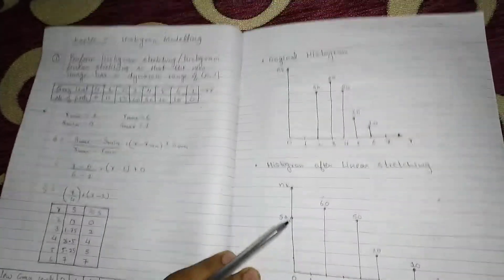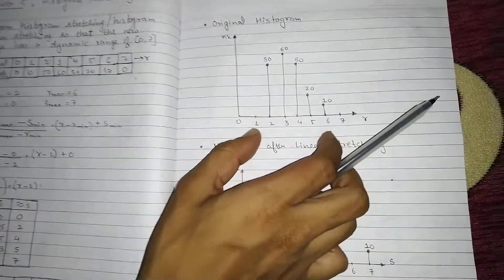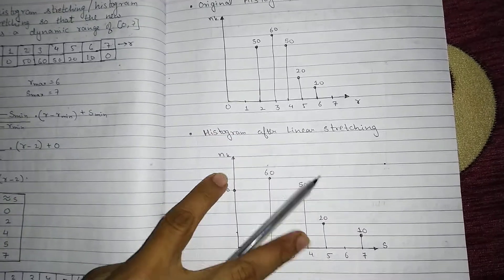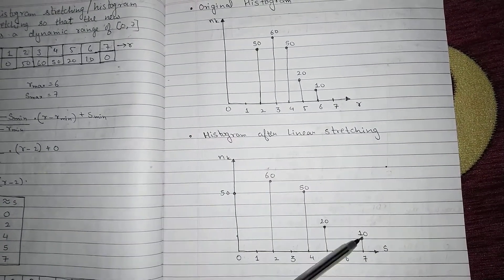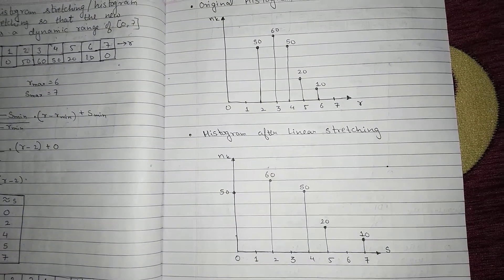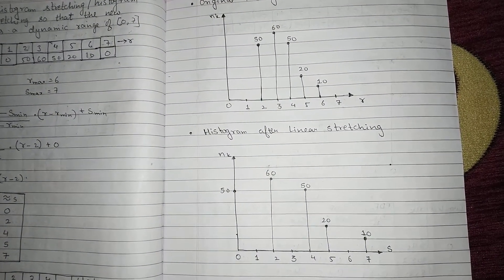Now look at this. Previously it was a crowded original histogram, but after that now it looks linearly stretched. It is stretched linearly. So that is why this is called as linear stretching. Thank you and see you in the next video.